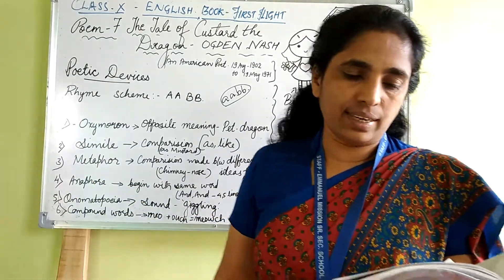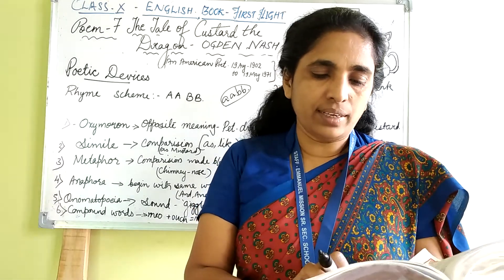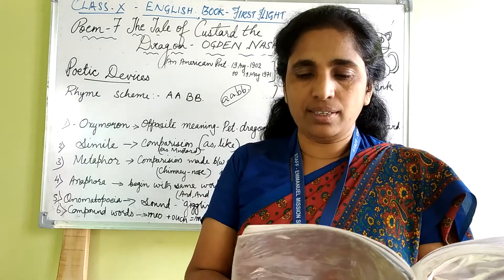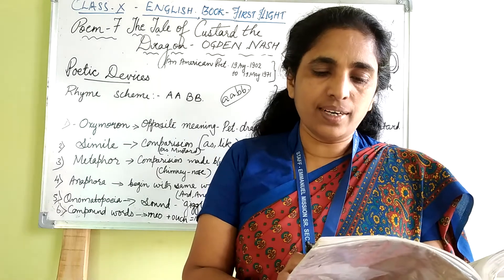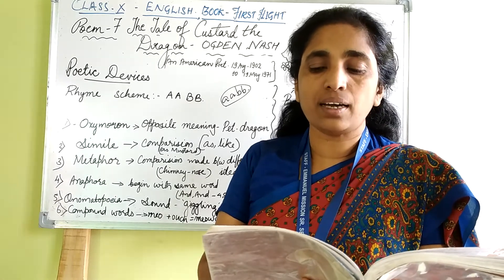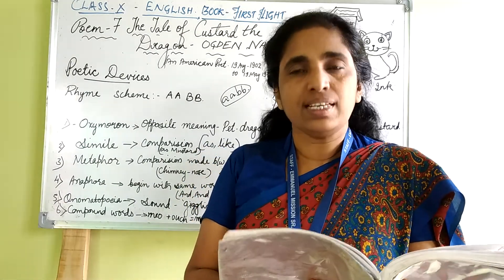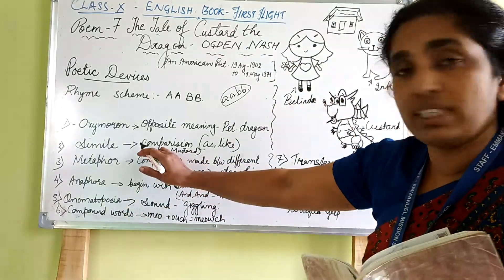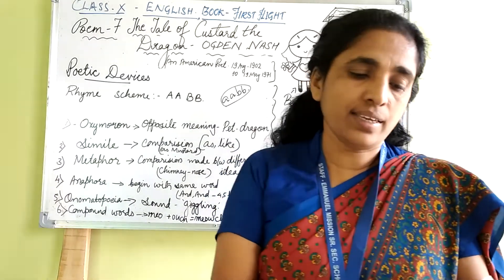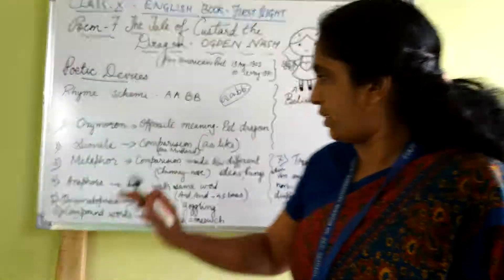Now the second stanza: 'The name of the little black kitten was Ink, and the little grey mouse she called him Blink, and the little yellow dog was sharp as mustard, but the dragon was a coward and she called him Custard.' In the third line, 'sharp as mustard' — the word 'as' is used for comparison. That is called simile. A word like 'as' or 'like' is used for comparison — that is simile.